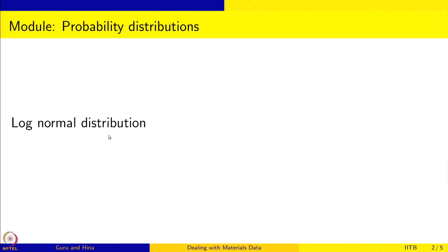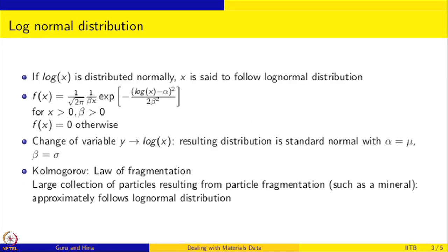In this module we have looked at discrete distributions and also the normal distribution, which is a continuous distribution. We are going to continue with continuous distributions — specifically, the log normal distribution. A variable x is said to follow log normal if log(x) is distributed normally. The probability density function is (1 / (√(2π) · β · x)) · exp(-(log(x) - α)² / (2β²)), where x > 0 and β > 0. Using the change of variable y = log(x), the resulting distribution is a normal distribution with α as the mean and β as the standard deviation.